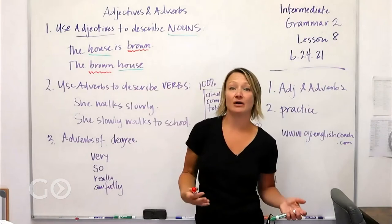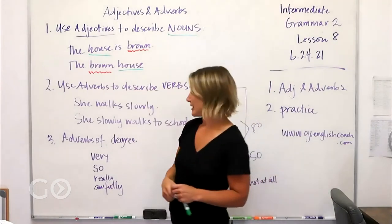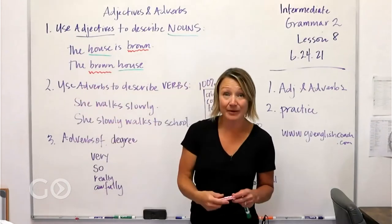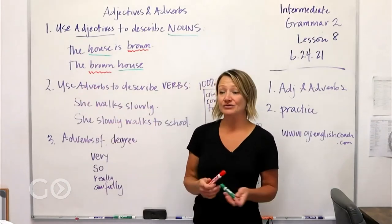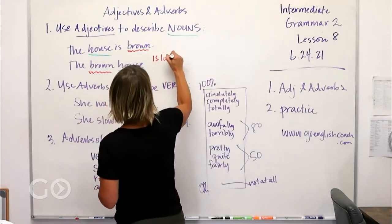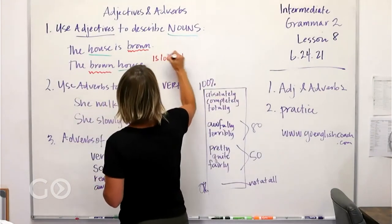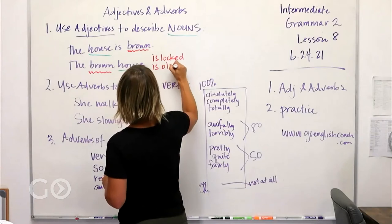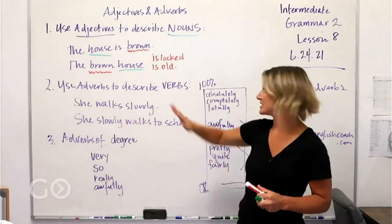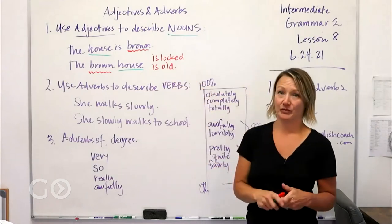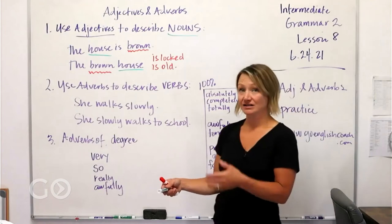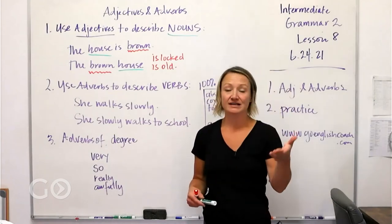So you've got the house, here's your subject, your verb, and then your adjective is at the end. The house is brown, that's your complete sentence. Now if we're going to say the brown house and you have something more to say about it, like the brown house is locked or the brown house is old. So there's another adjective. Locked is an adjective, these are both adjectives actually.